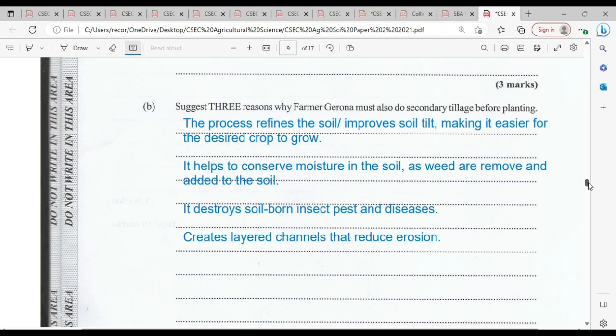So there are three reasons why farmer Girona must also do secondary tillage before planting. The reasons are simple. The process will refine the soil, or one might say improve soil tilt, making it easier for the desired crop to grow or to establish the roots. It helps to conserve moisture in the soil as weeds are removed and added to the soil. It will also destroy soil-borne insect pests and disease.